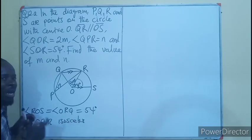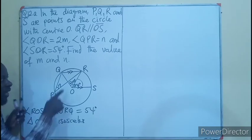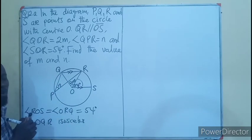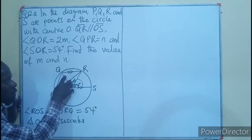If it is isosceles, then the base angles are equal, so angle OQR is also 54 degrees.